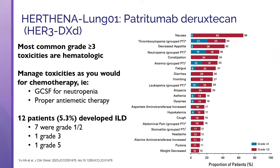This is HER3-DXD, and these are the most common toxicities shown in a swimmer's plot. You can see a lot of nausea — the majority was grade 1 or 2, but 66% of patients experienced it. Following the same theme as trastuzumab-deruxtecan, DXD is the same payload here, so you're seeing a lot of chemotherapy-like side effects: neutropenia, anemia, thrombocytopenia, and GI toxicities. The neutropenia rate for grade 3-4 was almost 20%, so you may want to seriously consider using G-CSF for this, along with proper antiemetic therapy — probably full coverage with a 5-HT3, NK1 receptor antagonist, and dexamethasone. About 5.3% of patients developed ILD — a little less than the other two drugs we talked about, but certainly something that can occur.